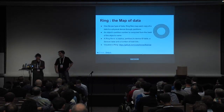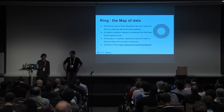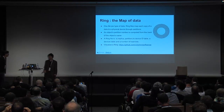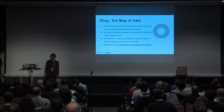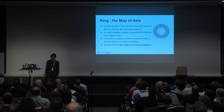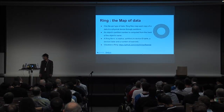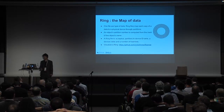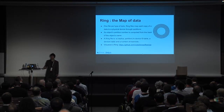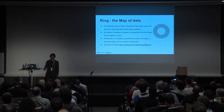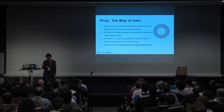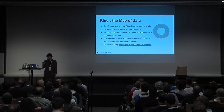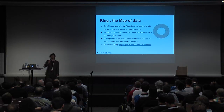The ring is something Swift developers are always talking about because it's one of the main components in Swift — it's a map of the data you have in your cluster. You have one ring file per type of data: one for containers, one for accounts, and one for objects. These files map each copy of each piece of data to a physical device through a mechanism called partitions. A partition is a number computed from an object's name including the container and account name — the full path of the object.